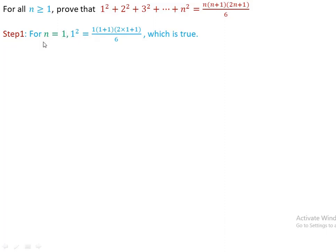Step 1: Proof for n = 1. For n = 1, substituting n by 1, we have 1² which is 1. On the right-hand side, 1×(1+1)×(2×1+1)/6 = 1×2×3/6 = 6/6 = 1. Therefore, this is true for n = 1.